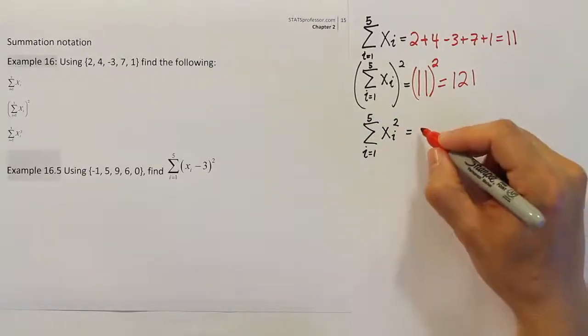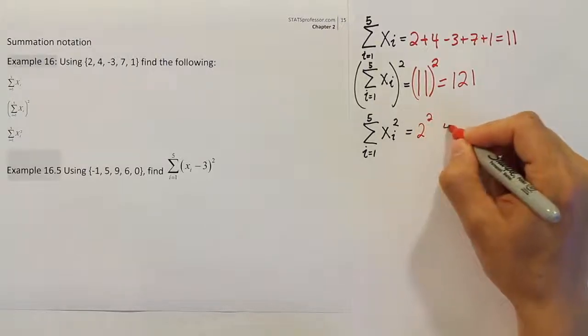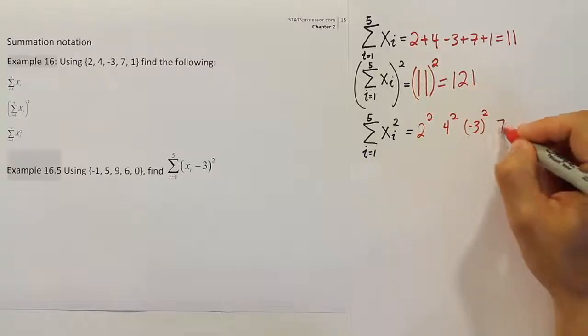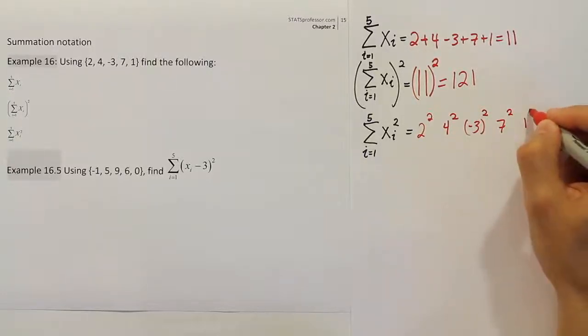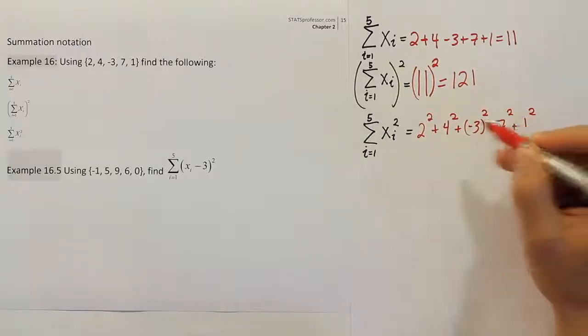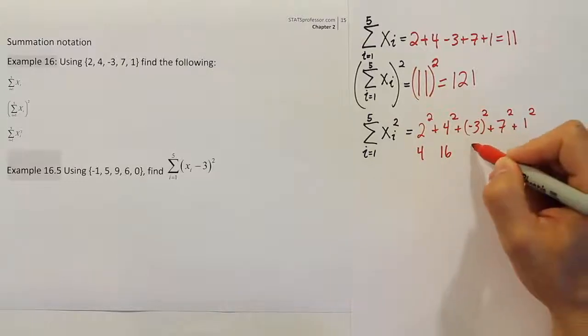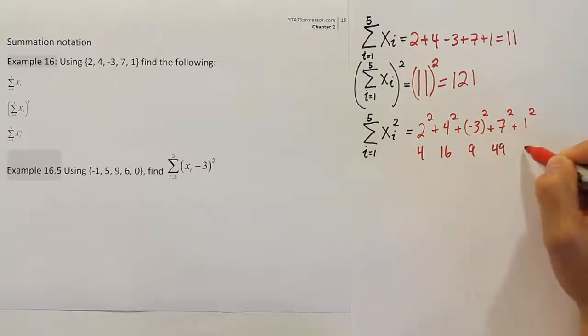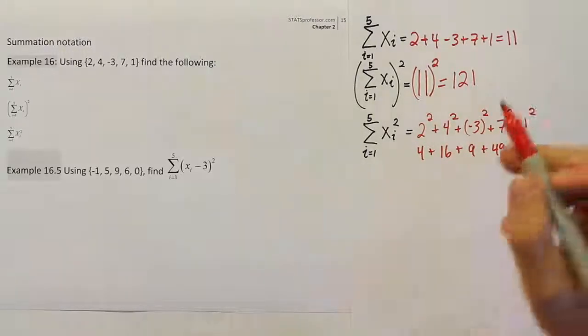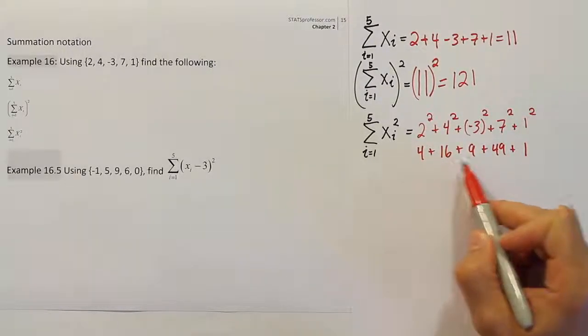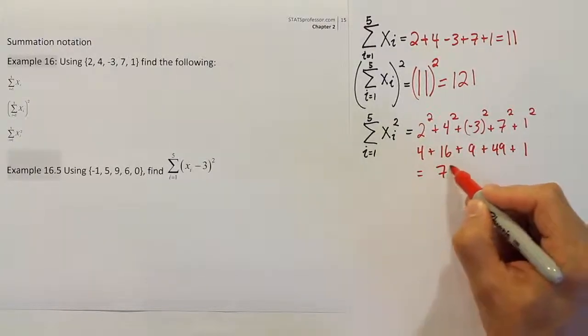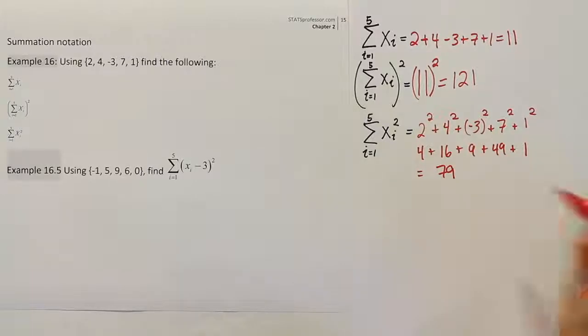So that means we're going to have 2 squared, and 4 squared, and negative 3 squared, and 7 squared, and 1 squared. And once we have all of them squared, we're going to add them up. So we're going to do the squaring first. That would give you 4, and 16, and 9, and 49, and 1. And then we're going to add them together. And that will be our final answer for this. So this and this make 20, and that 50, so that's 70, and then 9. So the answer turns out to be 79. So that's our solution for the last one.